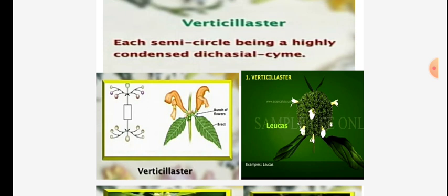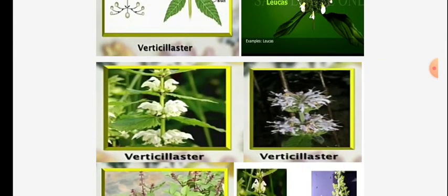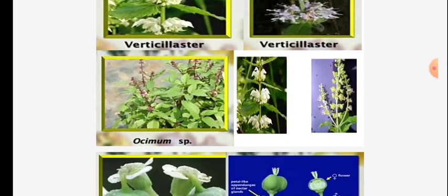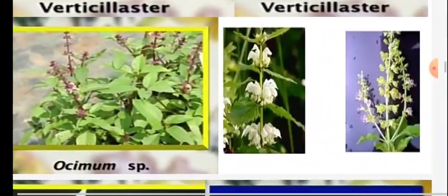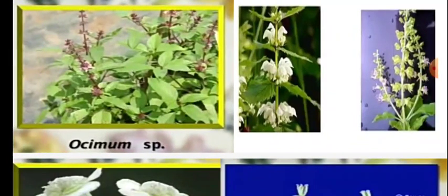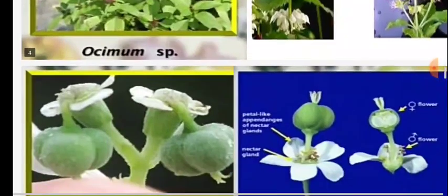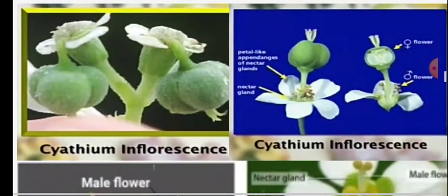In Verticillaster, it is showing the cymose type of condition. A good common example is Ocimum (tulsi/basil). You can see the flowers showing the subja condition. These are the magnified flowers of Ocimum. You can see the nodes and internodes on the stem, and the peduncle is present.